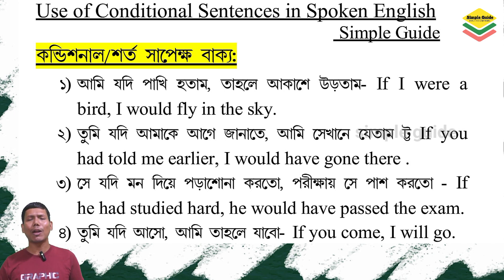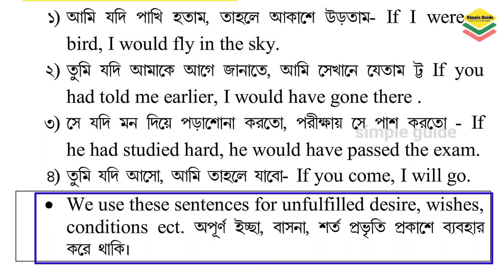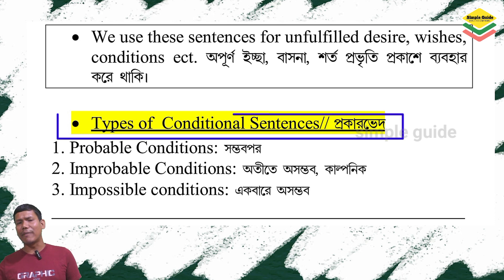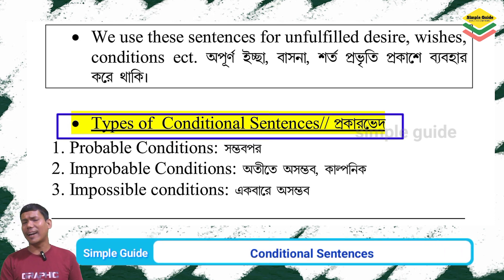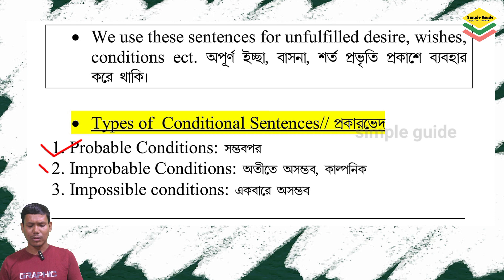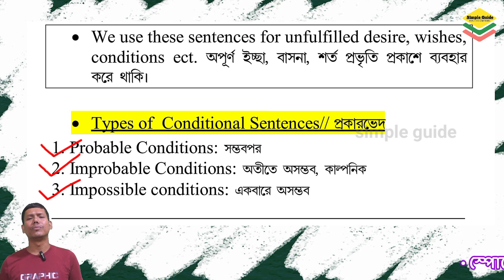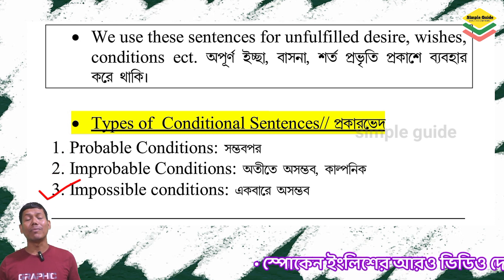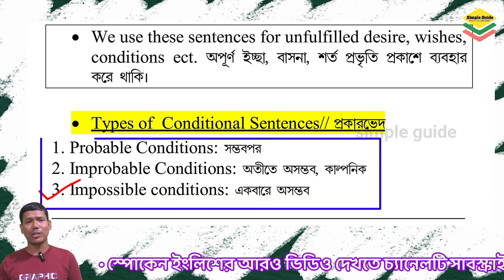We use these sentences for unfulfilled desires, wishes, or conditions. Now, let's check out the types of conditional sentences. There are three kinds: probable conditions, improbable conditions, and impossible conditions. We are going to discuss all three types, their structures, and their usage.